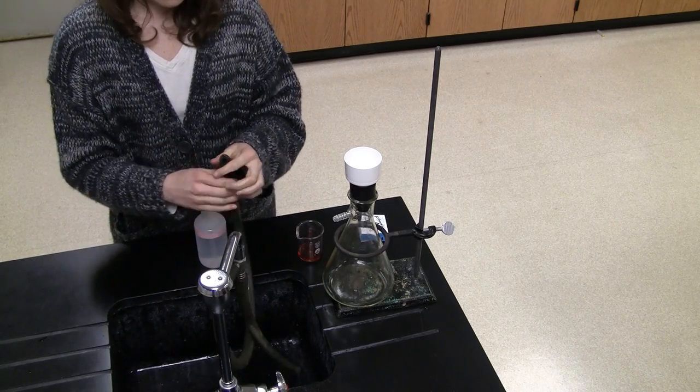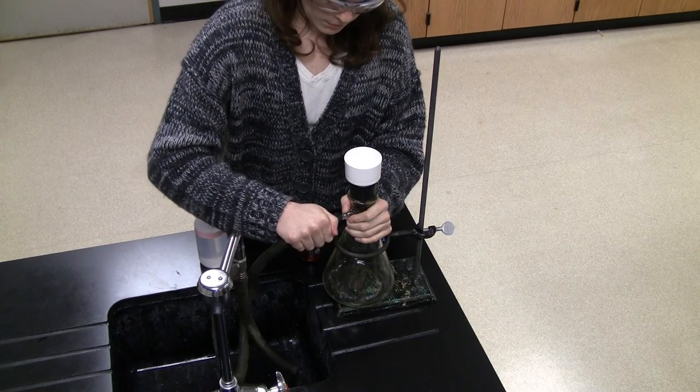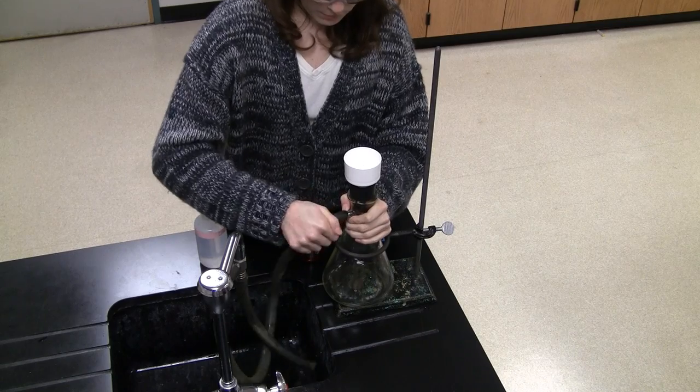Connect this hose to the side arm of the filtration flask. The suction aids in pulling the liquid through the filter paper in the Buchner funnel.